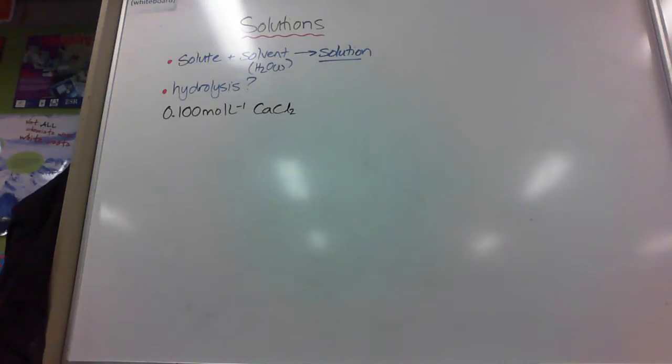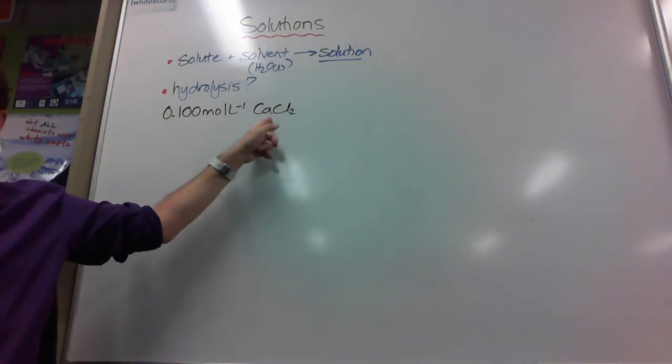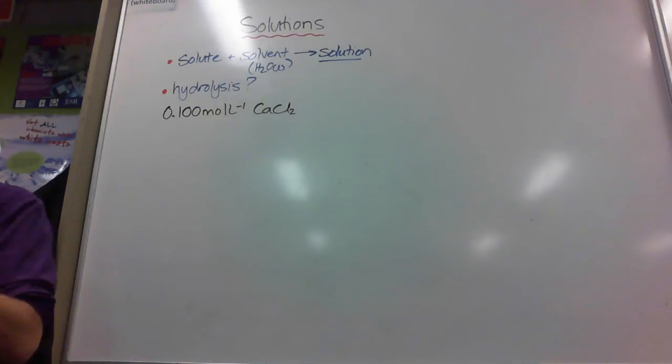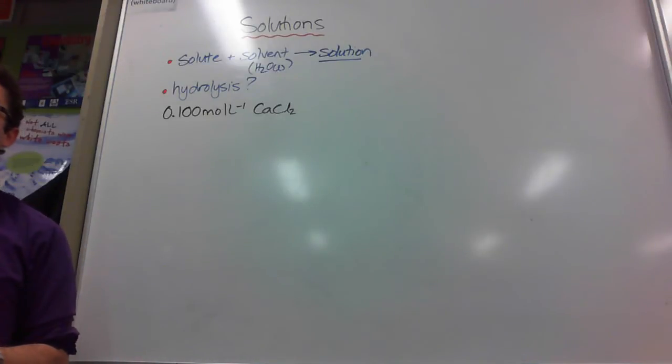To make this, you would need to put 0.1 moles of calcium chloride solid into every litre of water. I'm not going to worry about volumes here. That's how it would be made. How can I represent that as an equation?